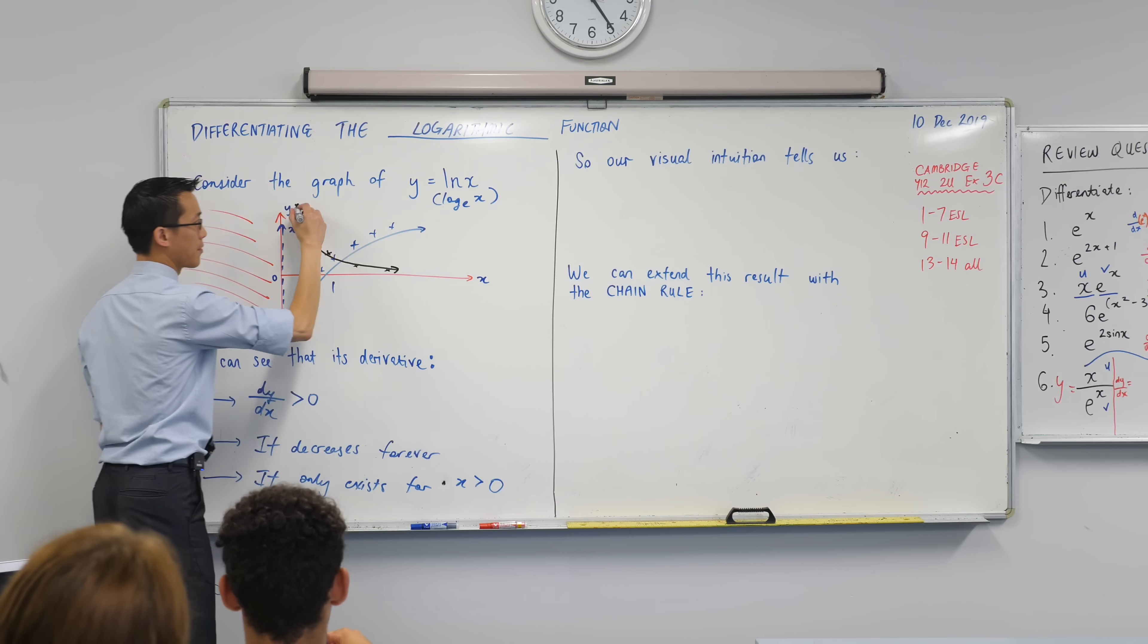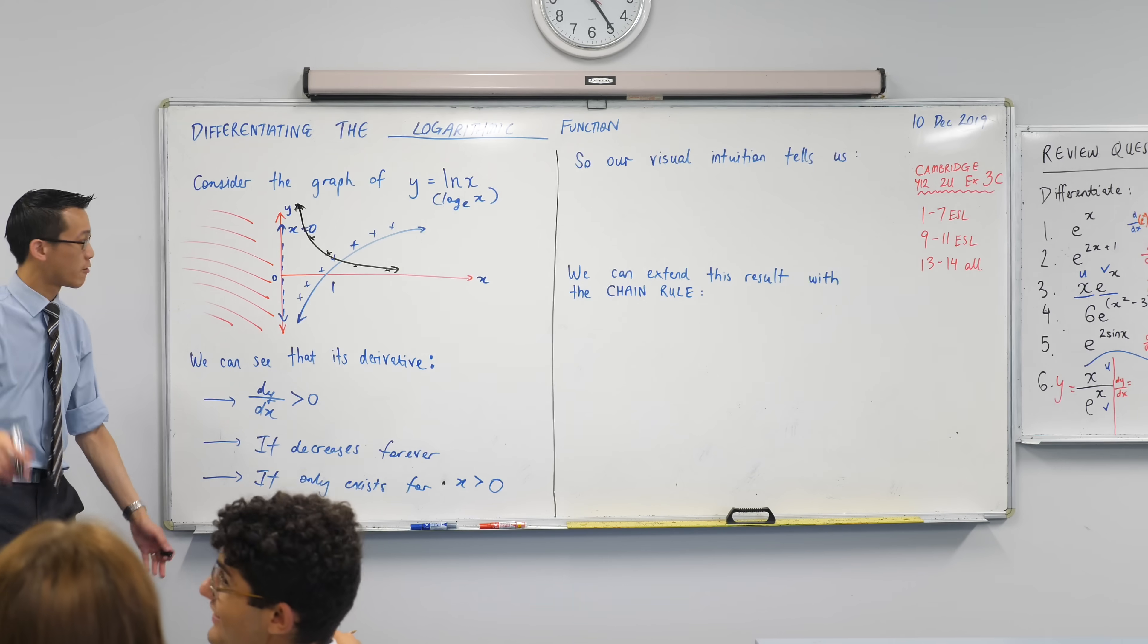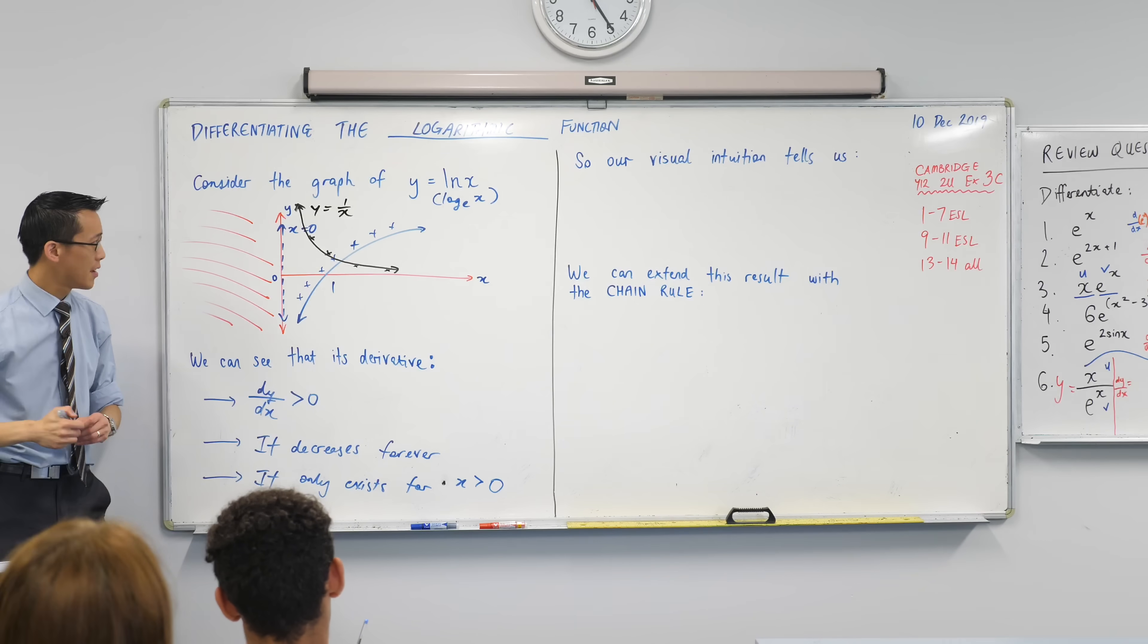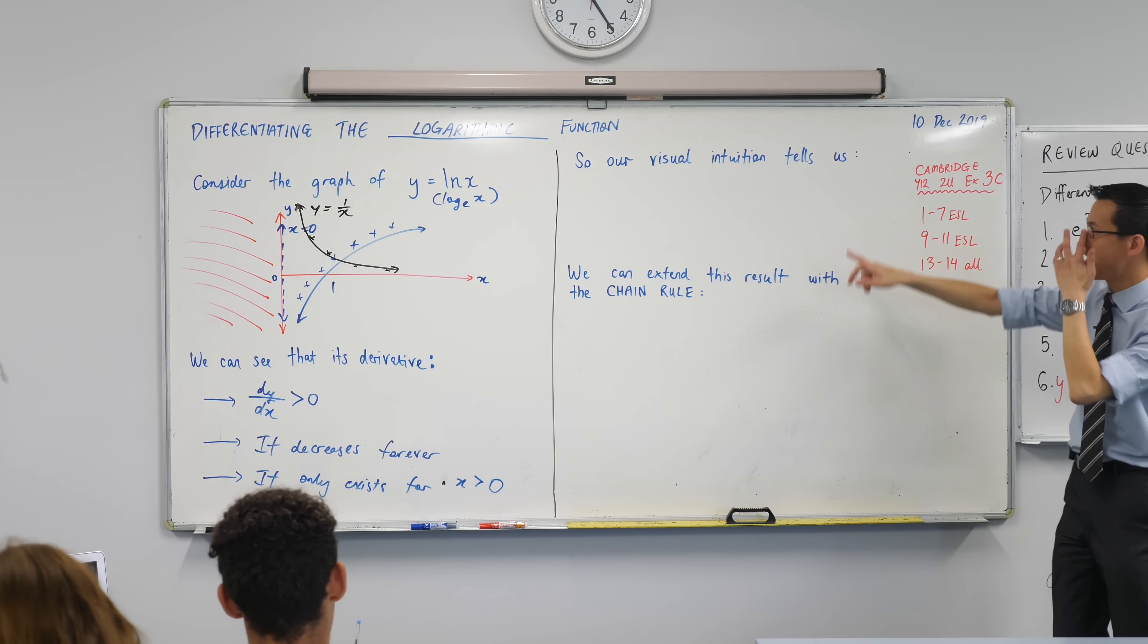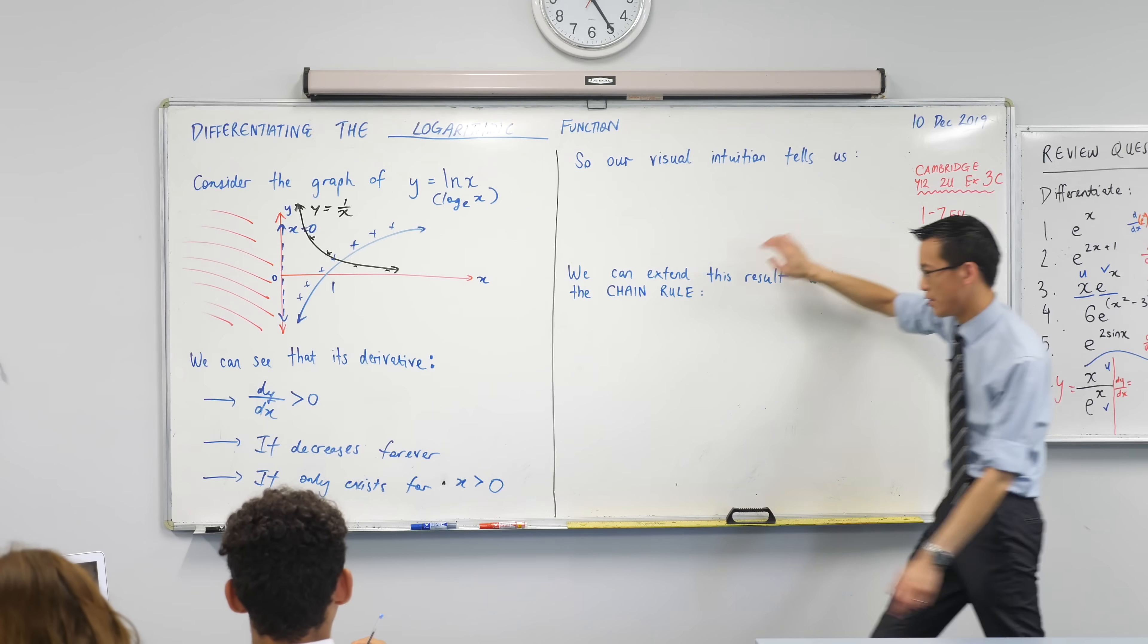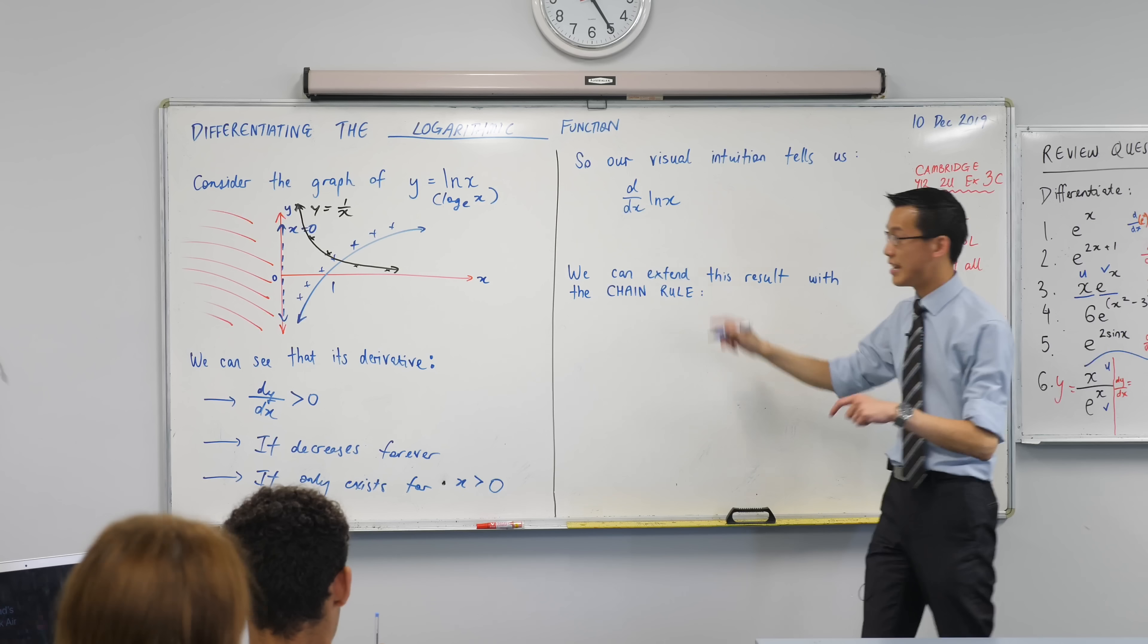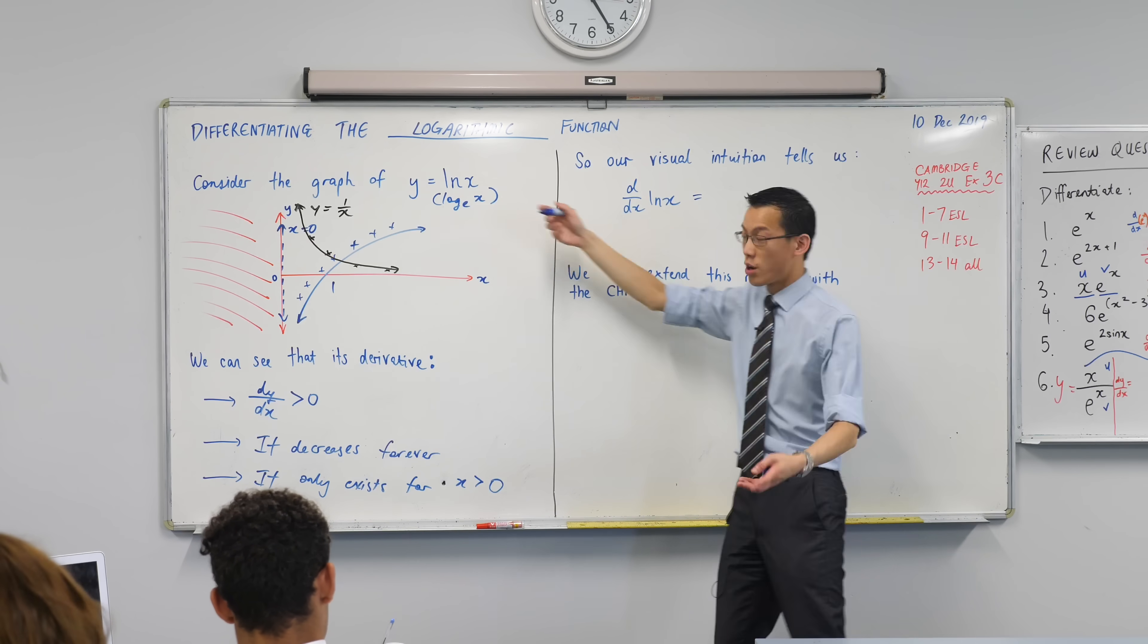It starts with an H. What is this? This is the hyperbola. This graph I've just drawn is 1 over x. So this is our conclusion from just looking at it visually. Our visual intuition, it tells us that the derivative of log x, what did we say it was? The hyperbola. What's its equation? 1 over x.